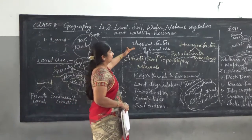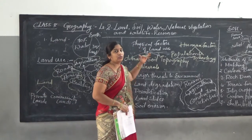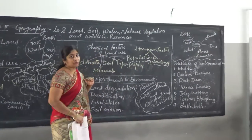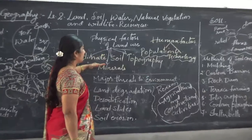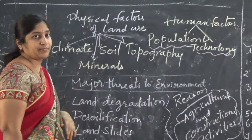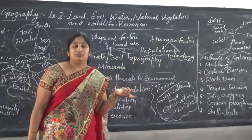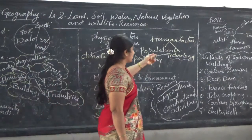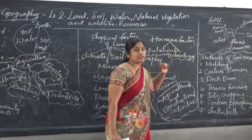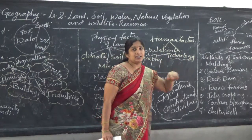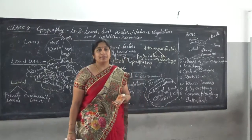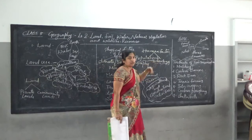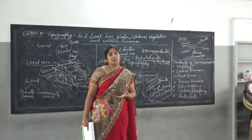Why is land suitable? What are the factors which make it possible to use land? There are physical factors like climate, soil, and topography. If these are suitable, then the land is used in a proper way. There are also human factors, meaning depending upon the population and technology. As population keeps increasing and technology expands, people are utilizing the land in a proper way using their technology.